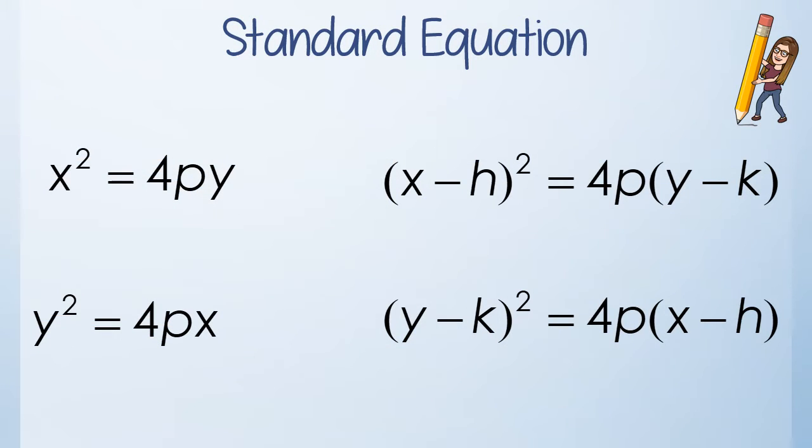Just a quick review of standard equations for parabolas. Let's take a look. Remember that if it's x squared, that's what we're used to. So that means it's going to be a parabola opening up if it's positive, down if it's negative. And remember, we might have a horizontal and vertical shift.